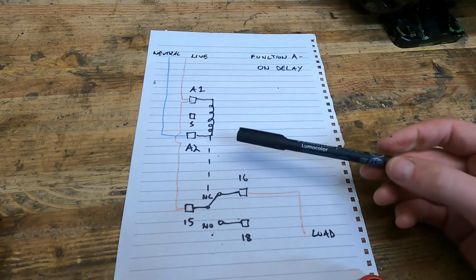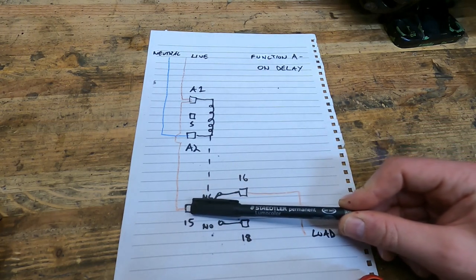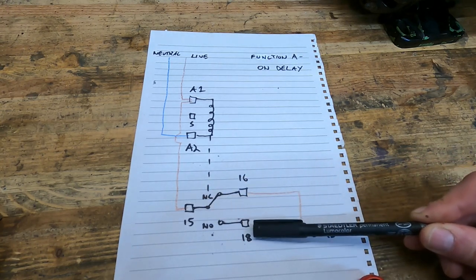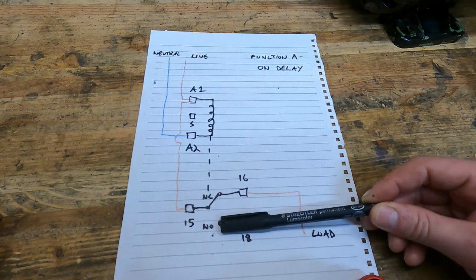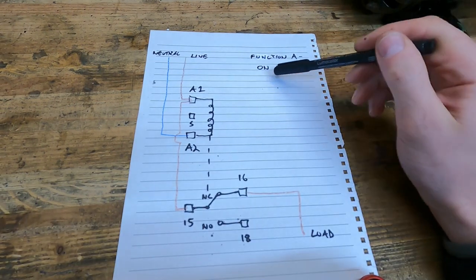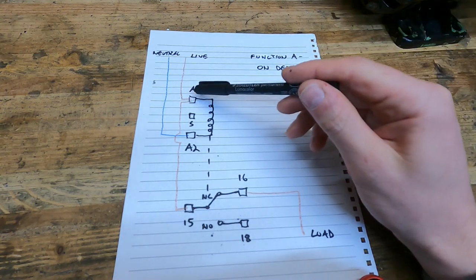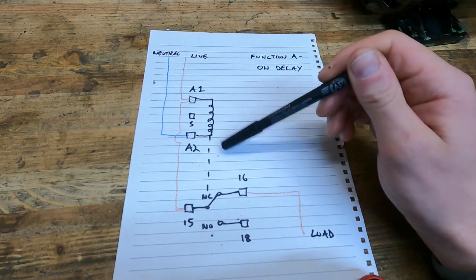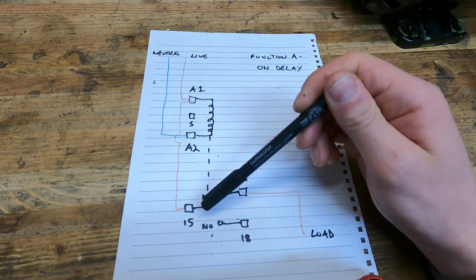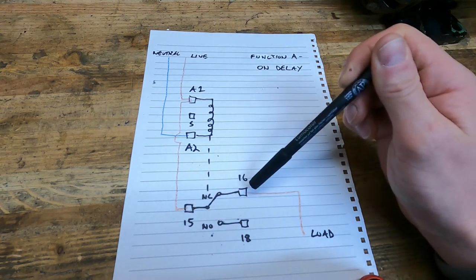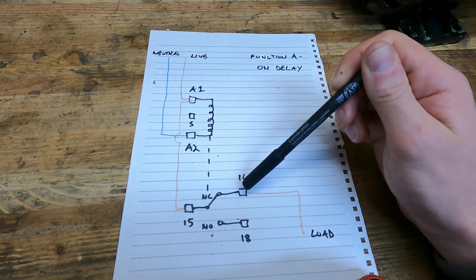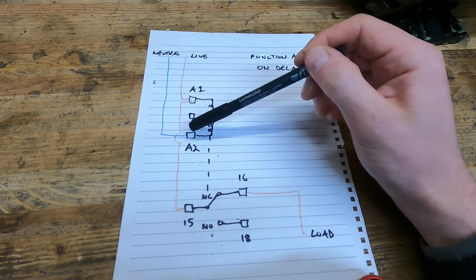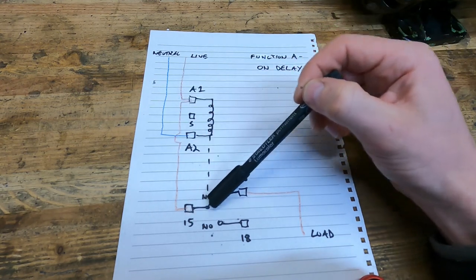Terminals 16 and 18 are on the output side. They get supplied via terminal 15 through a normally closed switch in the case of 16, or through a normally open switch in the case of 18. With function A on delay, when power is applied to the coil via A1 and A2, there's a delay of a specified time period before the relay actuates the switch.